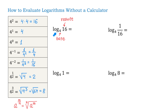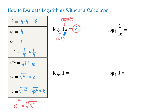The first one is log base 4 of 16. If the base is 4, then we need to ask: 4 to what power is equal to 16? That will be 2, because 4 to the second power equals 16. So, when we find a logarithm, we are finding an exponent to which the base must be raised to obtain this result.